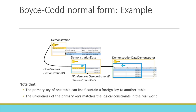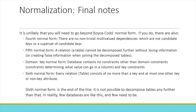Some final notes on normalization: it's unlikely that you will need to go beyond Boyce-Codd normal form. If you do, there are also some other normal forms. Fourth normal form, in which there are no non-trivial multi-valued dependencies which are not candidate keys or a superset of keys. Fifth normal form, where a table cannot be decomposed further without losing information or creating false information when joining the decomposed tables. Domain-key normal form, where a database contains no constraints other than domain constraints — determining what value can go into a column — and key constraints. In sixth normal form, every table consists of no more than a key and at most one other attribute. Sixth normal form is absolutely the end of the line; few databases need to go that far.